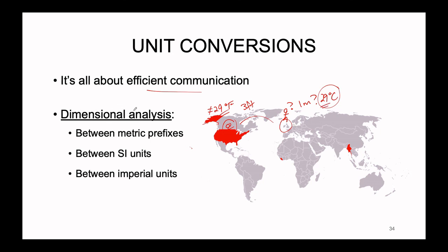Dimensional analysis is the process we use to convert units — either between metric units, interchanging metric prefixes, between SI units involving things like mass, distance, and speed, or between imperial units like gallons to cups, or of course between any of these systems. In this portion of the lecture, we'll learn a nice convention for converting units. It's just a tool, and we'll run through some example problems.